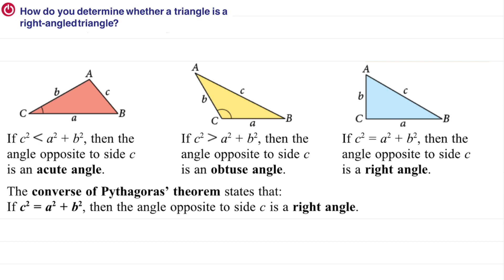There are three cases here. How do you determine whether a triangle is a right angle triangle? To use the Pythagorean Theorem, we must ensure the triangle is a right angle triangle where the angle in the middle must be 90 degrees. First case: if you calculate C squared and the value of C squared is less than the sum of A squared plus B squared, then the angle opposite to side C is an acute angle.